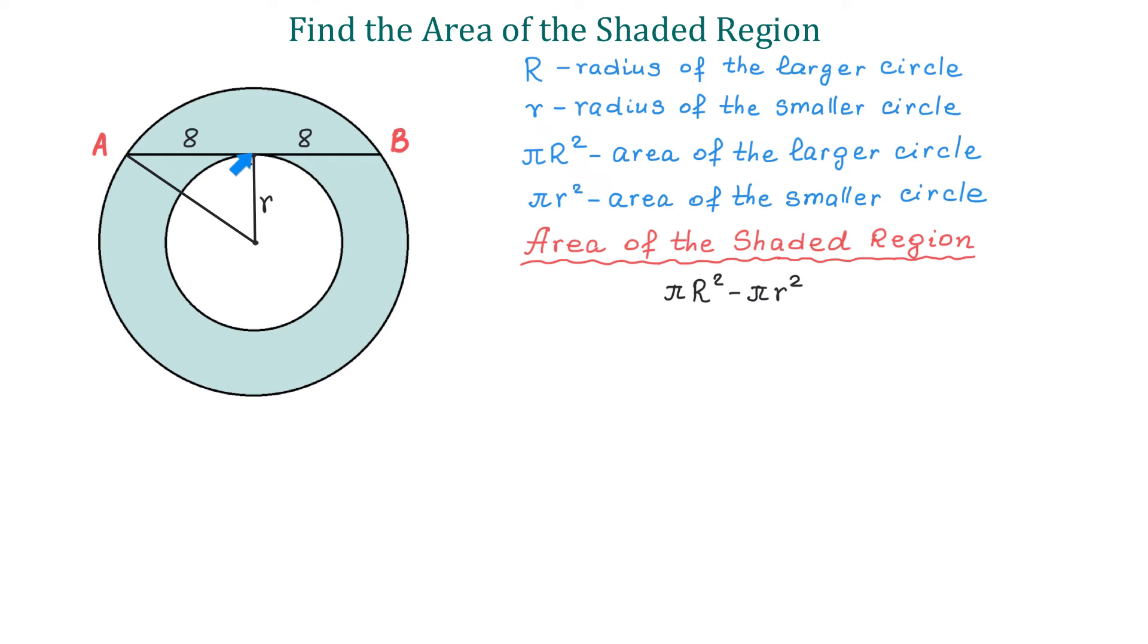Then in this triangle, the upper side is 8 units, the right side is lowercase r, and the hypotenuse is uppercase R because it represents the radius of the larger circle. Then using the Pythagorean theorem, we can write that 8² + r² = R². 8² is 64, so now we have 64 + r² = R².